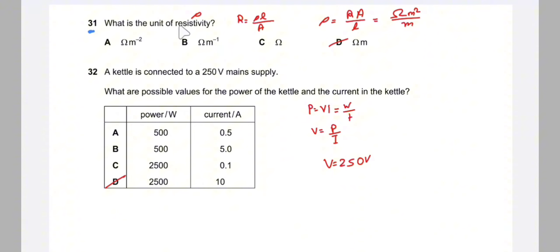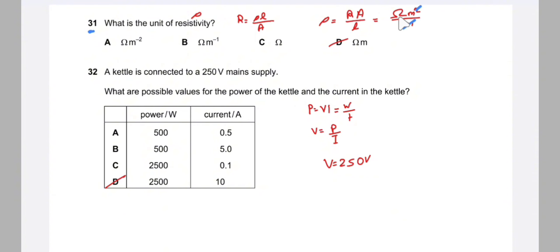Question 31: what is the unit of resistivity? Resistivity ρ = R·A/L. Units: ohm × metre² / metre = ohm·metre. The answer is D, ohm·metre.